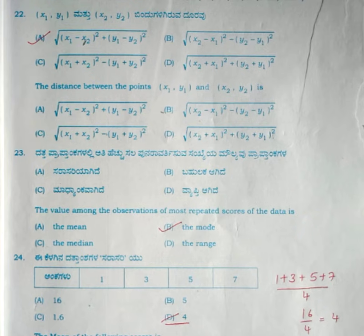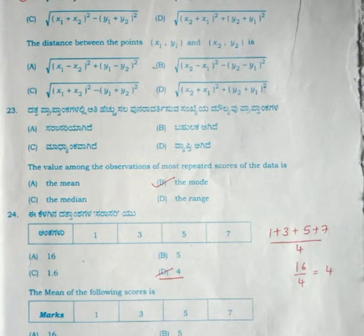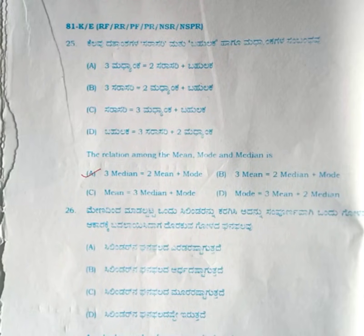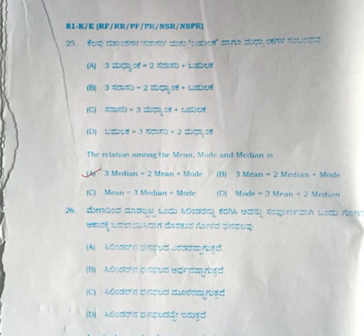For the 23rd question, the value among observations that is most repeated is the mode — the correct answer is option B. For the 24th question, the correct answer is option D, 4. Just add the scores and divide by the number of scores, you get 4. For the 25th question, the empirical relation between mean, median, and mode is 3 median equals 2 mean plus mode, therefore the correct answer is option A.